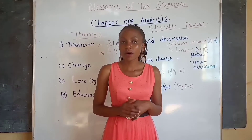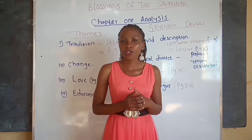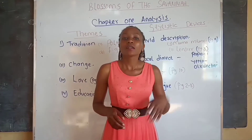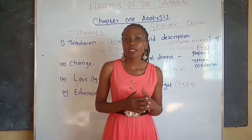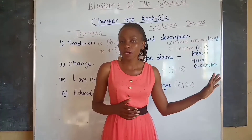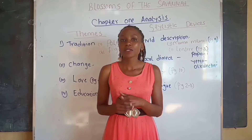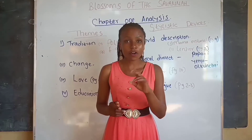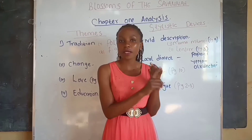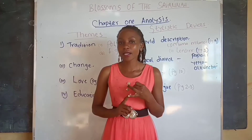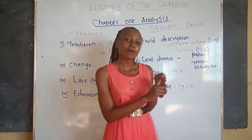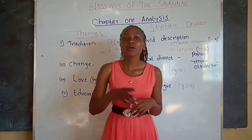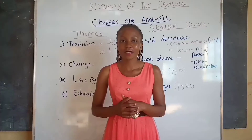Chapter 1 is about relocation from Nakuru to Nasila, and the Kaelo family is moving from Nakuru town to Nasila. This family consists of four members: Parasimei Ole Kaelo, Mama Milanoi, and their daughters Taiyo and Resian.